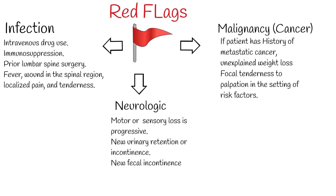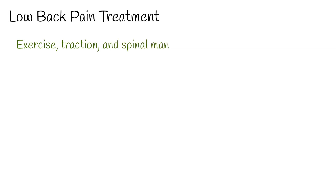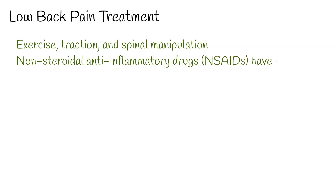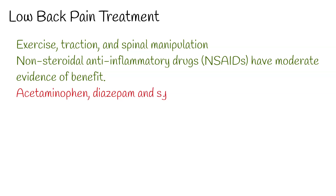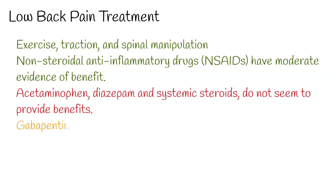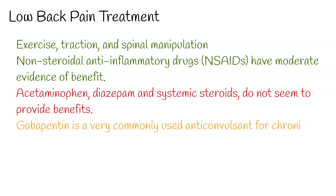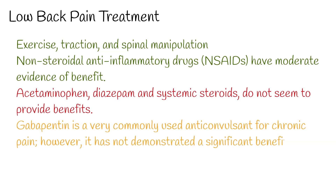If no red flags are present, treatment is mostly conservative. Non-pharmacologic interventions such as exercise, traction, and spinal manipulation have shown some benefits. NSAIDs have moderate evidence of benefit. Acetaminophen, thiazepam, and systemic steroids do not seem to provide benefits. Gabapentin is a very commonly used anticonvulsant for chronic pain; however, it has not demonstrated a significant benefit for patients with chronic low back pain.